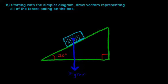We've moved on to part B of our ramp problem. Part B says starting with this simple diagram, draw vectors representing all of the forces acting on the box. Off the bat we've been given the vector representing the gravitational force on our box, which always points down toward Earth from our object. The gravitational force is already put on our diagram.